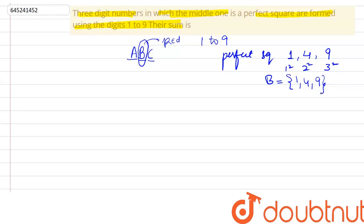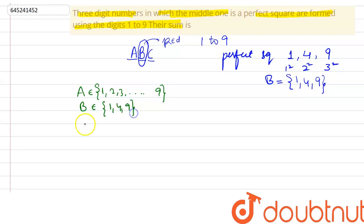There is no additional constraint for A and C. A belongs to 1 through 9 — A cannot be zero since it is the leading digit. B belongs to {1, 4, 9} as already established. C belongs to 0 through 9, giving ten possible values.